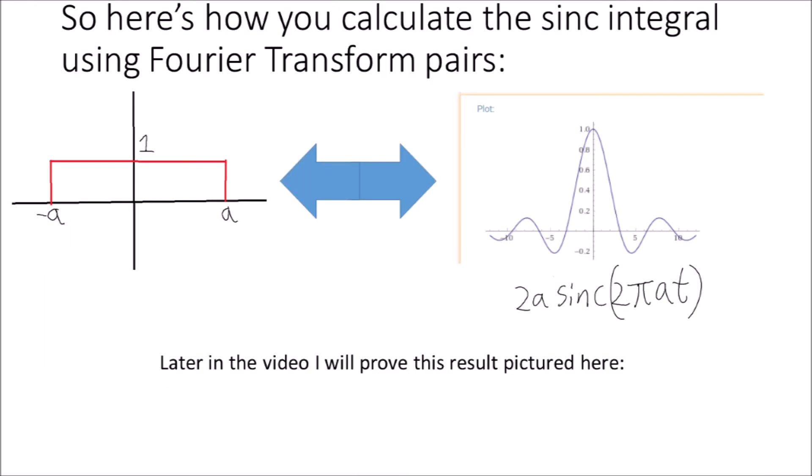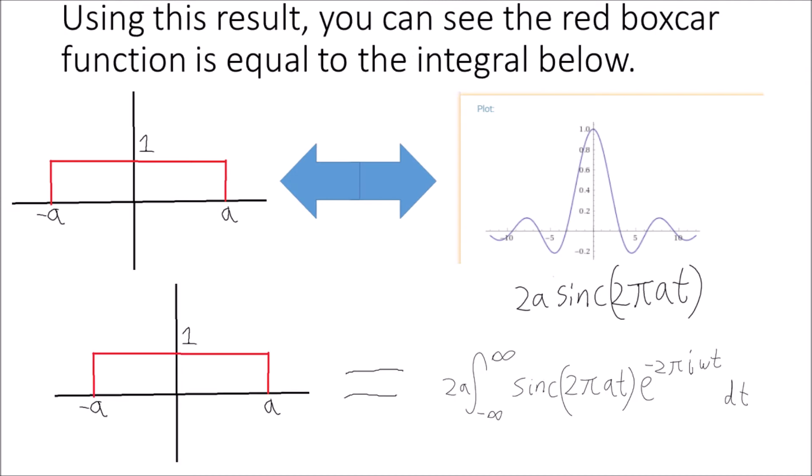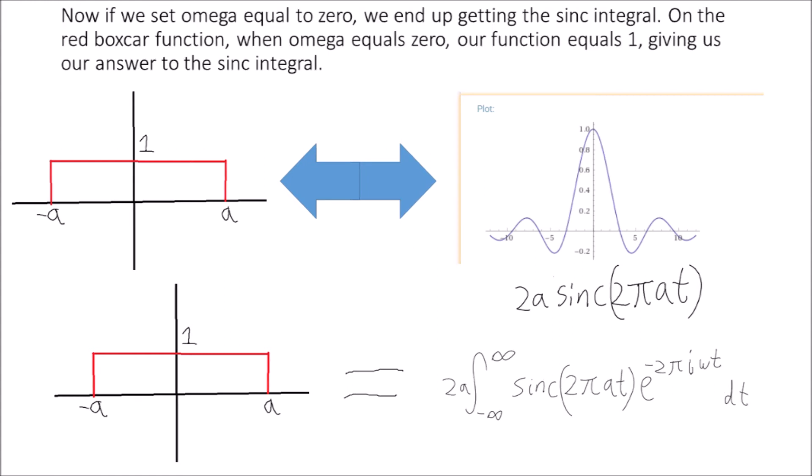Here's how you calculate the sinc integral using Fourier transform pairs. Later in the video I will prove this result. Using this result, the red boxcar function is equal to the integral shown. Now if we set omega equal to 0, we end up getting the sinc integral. On the red boxcar function, when omega equals 0 our function equals 1, giving us our answer to the sinc integral.